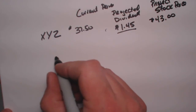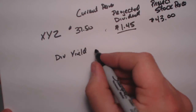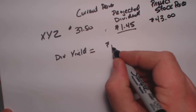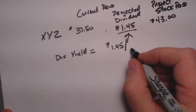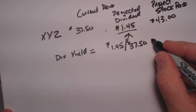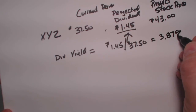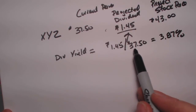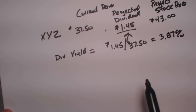The dividend yield — we'll call it DIV yield — is going to be equal to $1.45 divided by $37.50, the starting price, and that gives us a percentage of 3.87%. So we took the dividend and divided it by our starting price, and that gave us our dividend yield, which will always be a percentage.